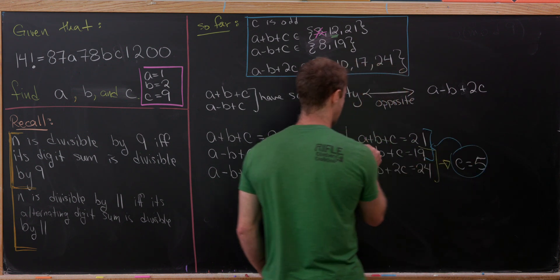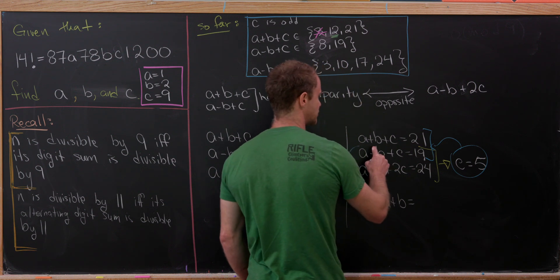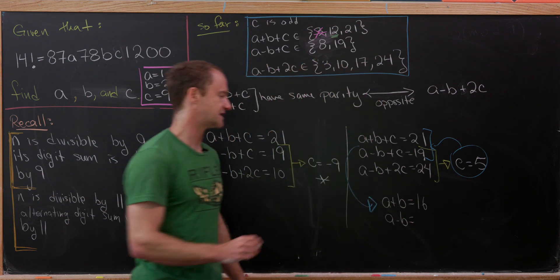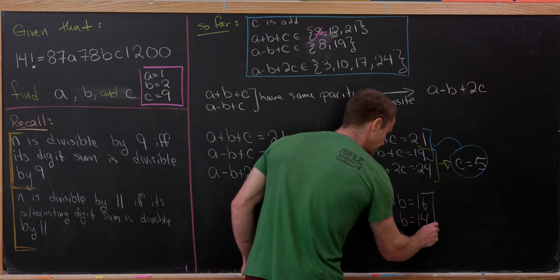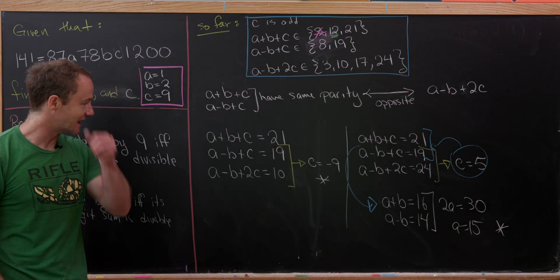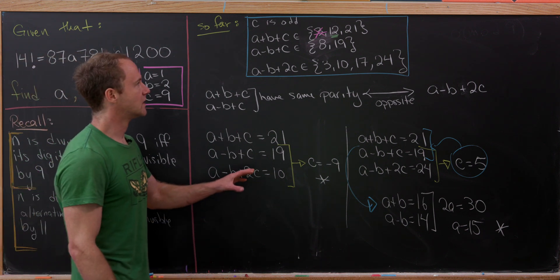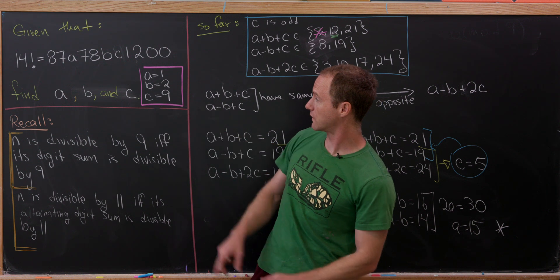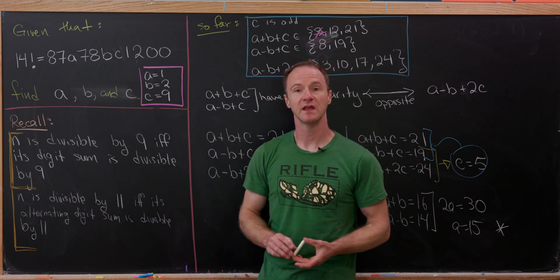Taking C = 5 and plugging into the first two equations: A + B = 21 − 5 = 16, and A − B = 19 − 5 = 14. Adding those: 2A = 30, so A = 15 — but that's impossible since digits must be between 0 and 9. This covers all cases from A + B + C = 21. So the unique solution is A = 1, B = 2, C = 9.